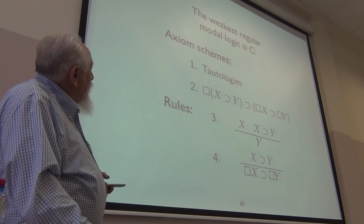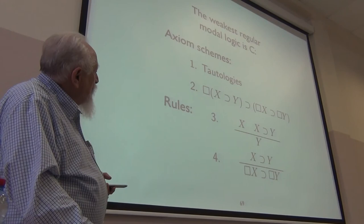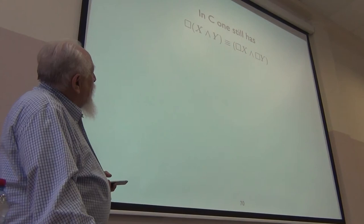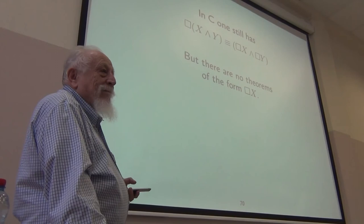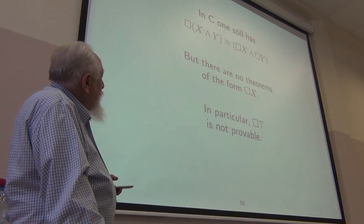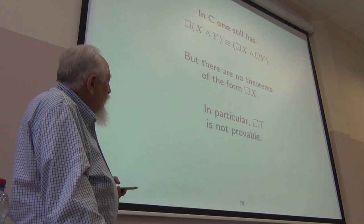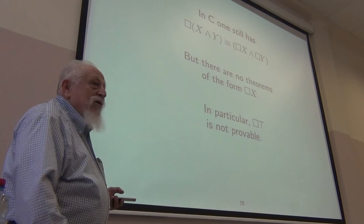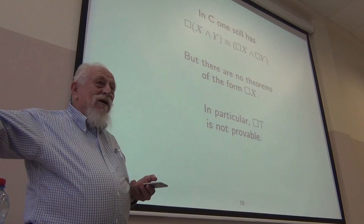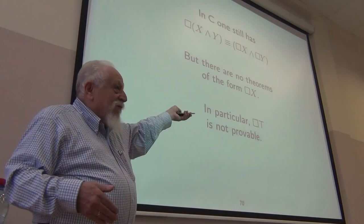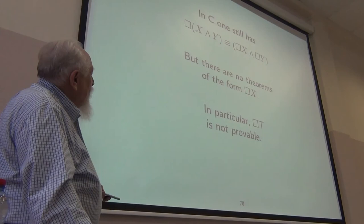In C, you can still prove that box distributes over AND. But there are no theorems that say something is necessary — in particular, truth is not necessary as a provable thing. If you had box of a tautology, C would collapse to K: if x is a theorem, so is T implies x; by regularity, so is box-T implies box-x; if you had box-T you'd have box-x, recovering necessitation. But that's not a proof that box-T is not provable — we need semantics for that.